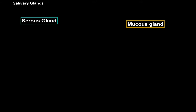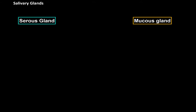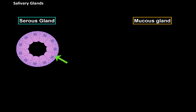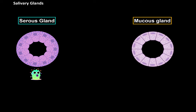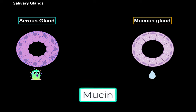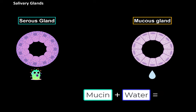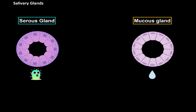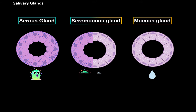The serous gland contains a lot of granules that produce a watery secretion containing enzymes like alpha amylase. Mucus glands stain lighter than the serous gland because they don't have those granules, and they mainly produce mucin that absorbs water to form a lubricating secretion called mucus. Then there's a combination of those called seromucus glands, which produce both mucus and enzymes.